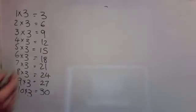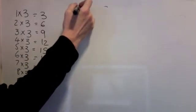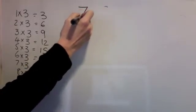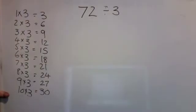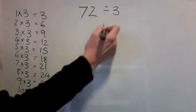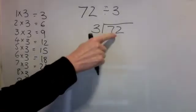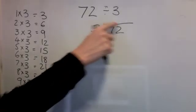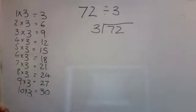Division level 5. I'm going to divide 72 by 3. Here's my 3 times table — I'm going to be using that, so I've got it ready. The first thing I'm going to do is write out my sum in a bus stop. The number I'm dividing goes in the bus stop and the number I'm dividing by goes outside the bus stop.